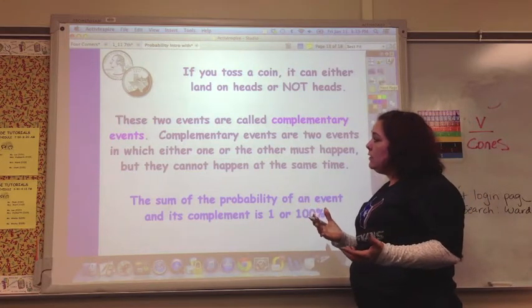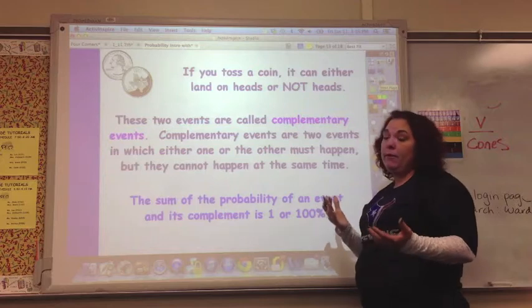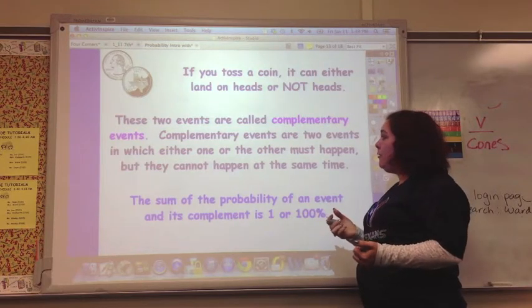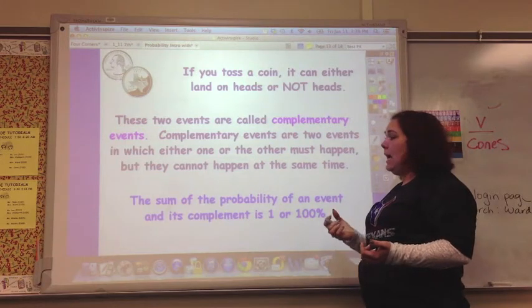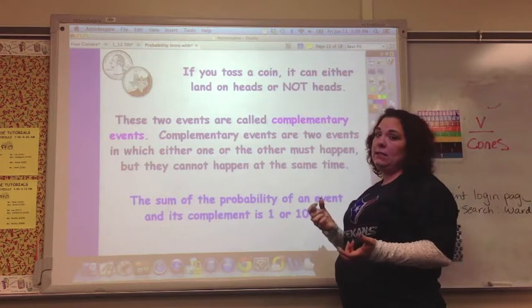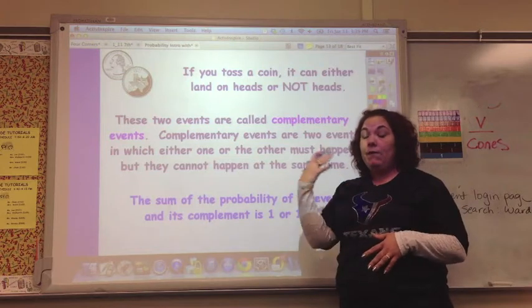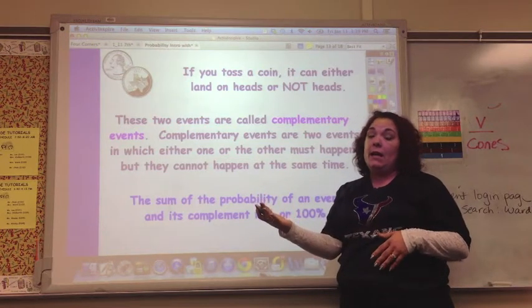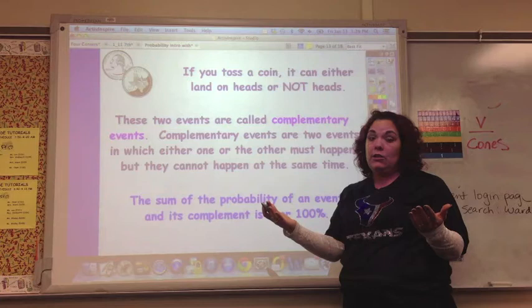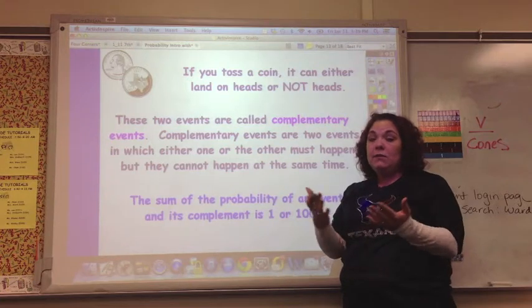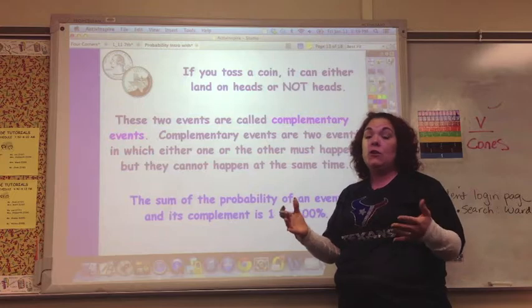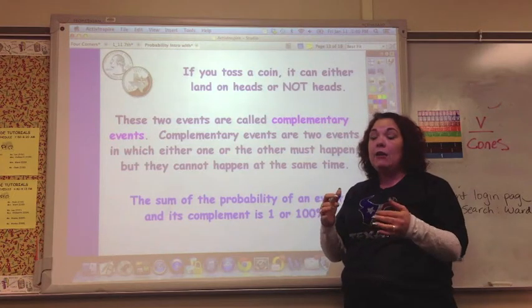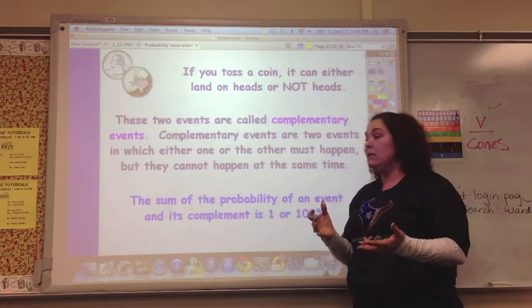And these two events are called complementary events. Complementary events are two events in which either one or the other must happen, but they cannot happen at the same time. So it's 50% chance that you're going to get heads and 50% chance that you're going to get tails. And those add up to 100%. You're going to get either heads or you're going to get tails. You're not going to not get anything, and you're not going to get both heads and tails.